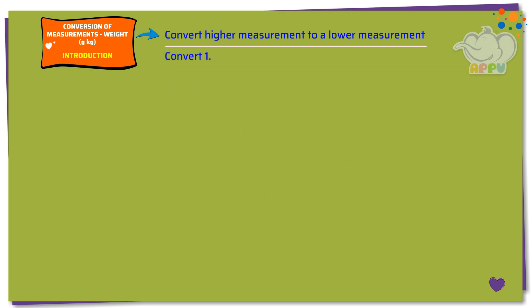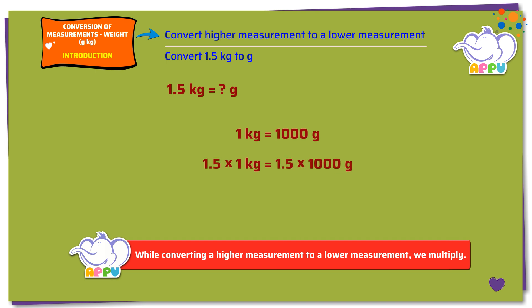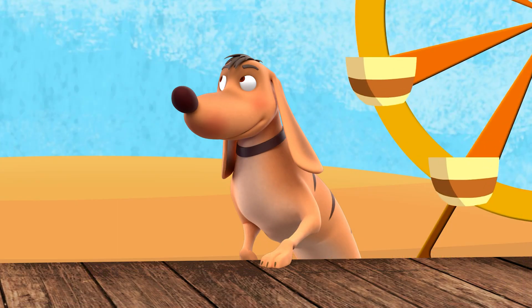Now let's convert 1.5 kg to grams. We need to find how much is 1.5 kg in grams. We know that 1 kg equals 1000 g. Multiplying both sides by 1.5, we get 1.5 × 1 kg = 1.5 kg, and 1.5 × 1000 g = 1500 g. So 1.5 kg equals 1500 g.